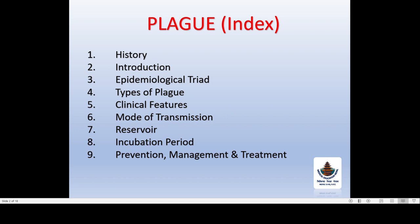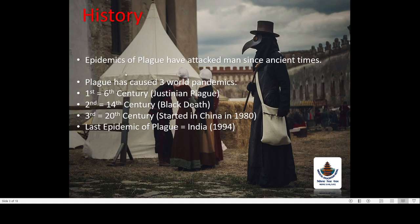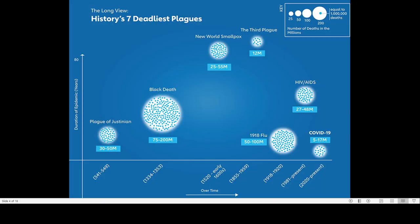The epidemics of the plague have attacked men since ancient times. The plague has caused three world pandemics — you can see the severity from that alone. For comparison, COVID-19 has currently caused one pandemic. The first pandemic was in the 6th century, known as the Justinian plague. The second was in the 14th century, known as the black death. The third was in the 20th century, which started in China in 1860, and the last epidemic of plague in India was in 1994.